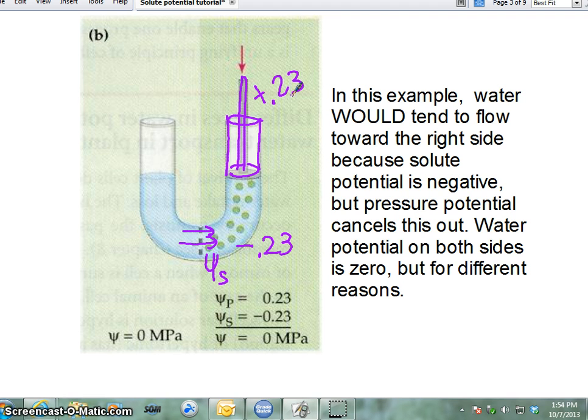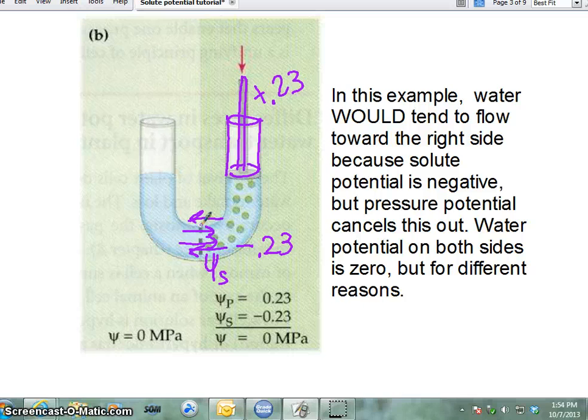And they're telling you that the pressure is plus 0.23. Well, that means that the water potential is actually going to be zero, meaning the water is going to be going both directions at the same rate. Why? Because since this can't go up any further, every time a water goes this way, it's going to force the water the other way.